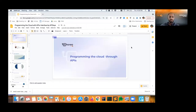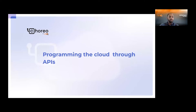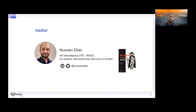Let me start by sharing my screen. I hope all of you can see my screen okay. So today we are going to be talking about what it means to program the cloud through APIs. You can catch me on my Twitter handle or my LinkedIn handle. I'm also the co-author of the book released last year called Microservices Security in Action, and I'm the Deputy CTO and VP at WSO2 for API management and integration.